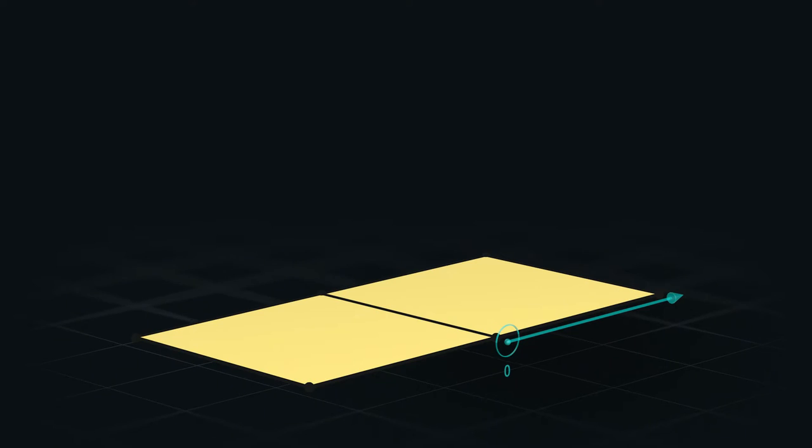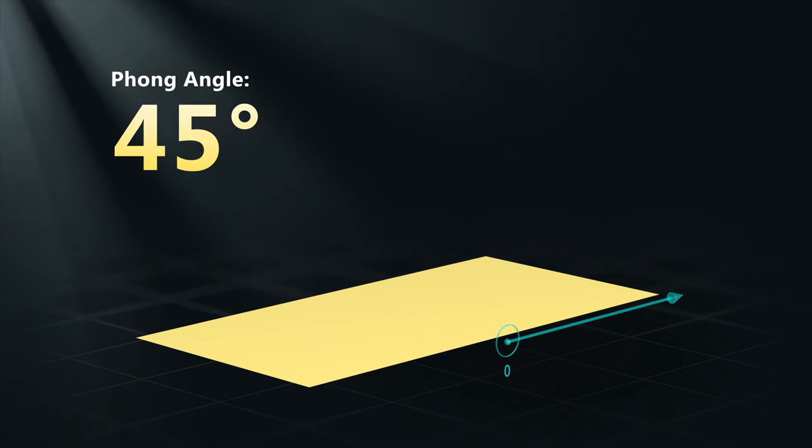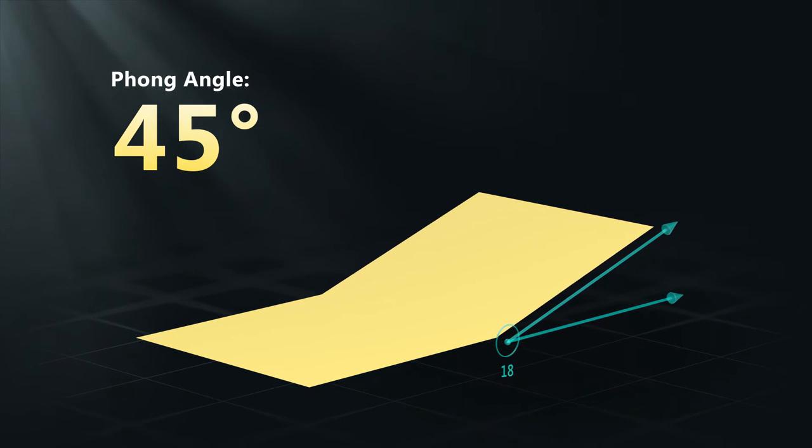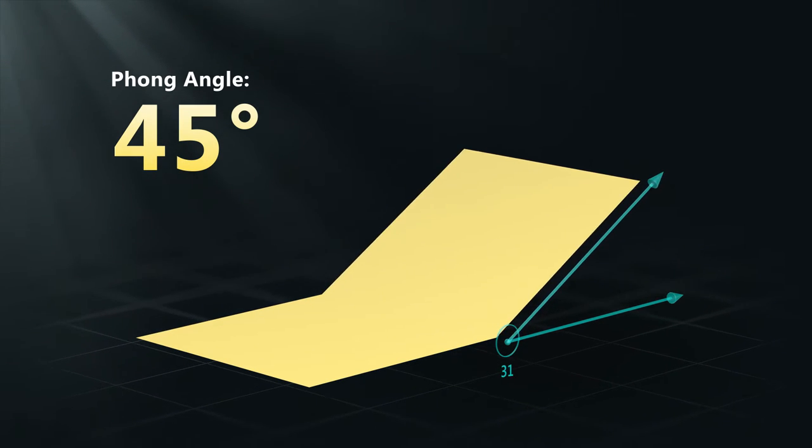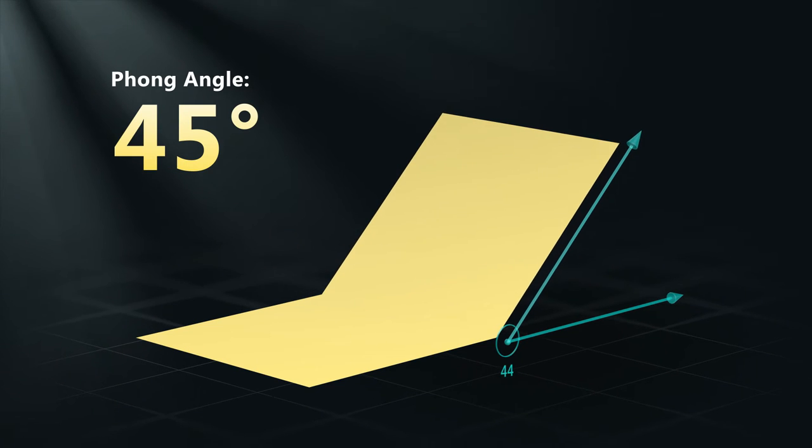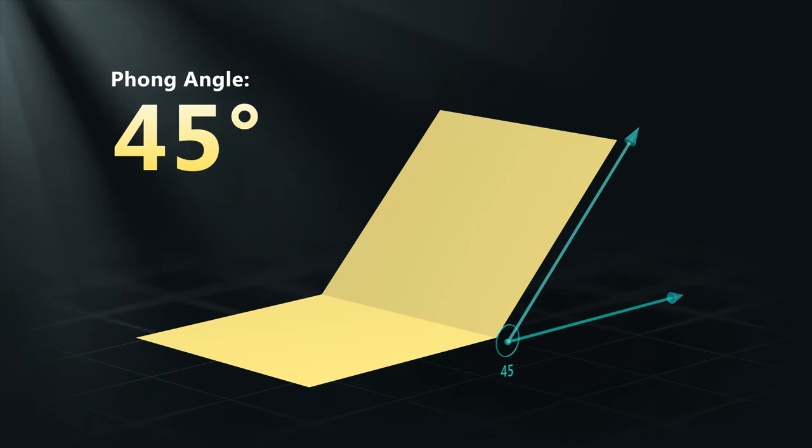Here we have two connected quads, with phong shading activated and an angle limit of 45 degrees. If we start to bend the two polygons, the surface remains smooth. When we go past the 45 degree angle, however, the phong shading breaks. We can simply increase the angle limit to make them smooth again.